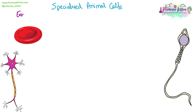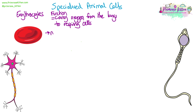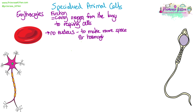We're going to look at some different examples of specialised cells from both animals and plants. Starting with erythrocytes, otherwise known as red blood cells. Their function is to carry oxygen from the lungs to respiring cells. They're specialised by having no nucleus — one of the only animal cells without one — to make more space for haemoglobin, a protein that binds to oxygen and transports it around the body. They also have a biconcave shape, with a dip in the middle either side, kind of like a doughnut but with no hole. This gives them a high surface area, which increases the rate of diffusion, helping oxygen to diffuse into and out of the cell quickly.